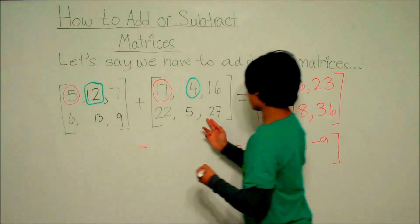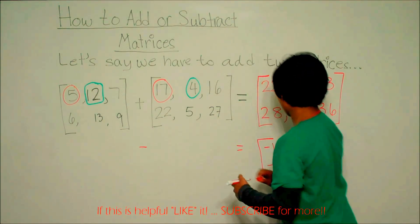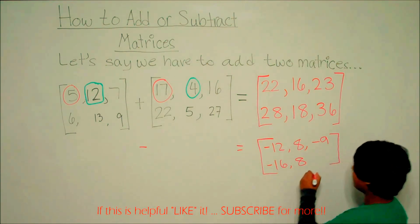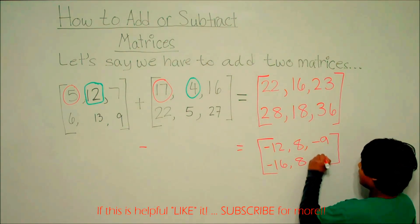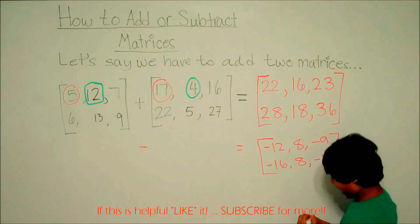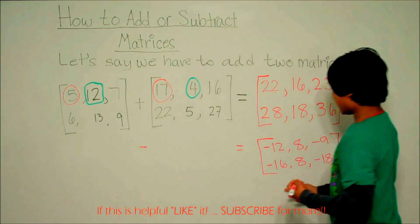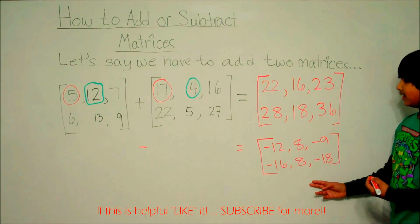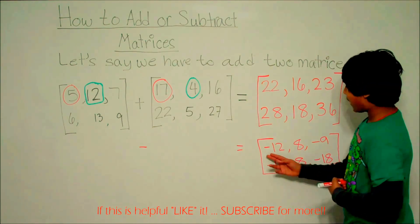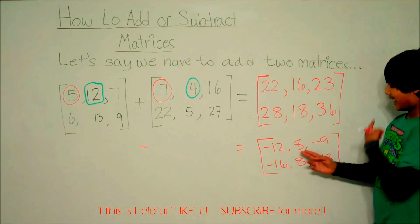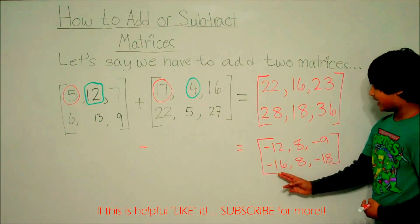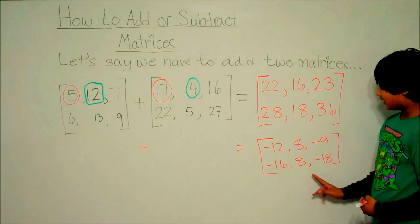9 minus 27 is negative 18. As you noticed, these two matrices have the same format as the answer. And so, the answer to this problem is negative 12, 8, negative 9, negative 16, 8, and 18.